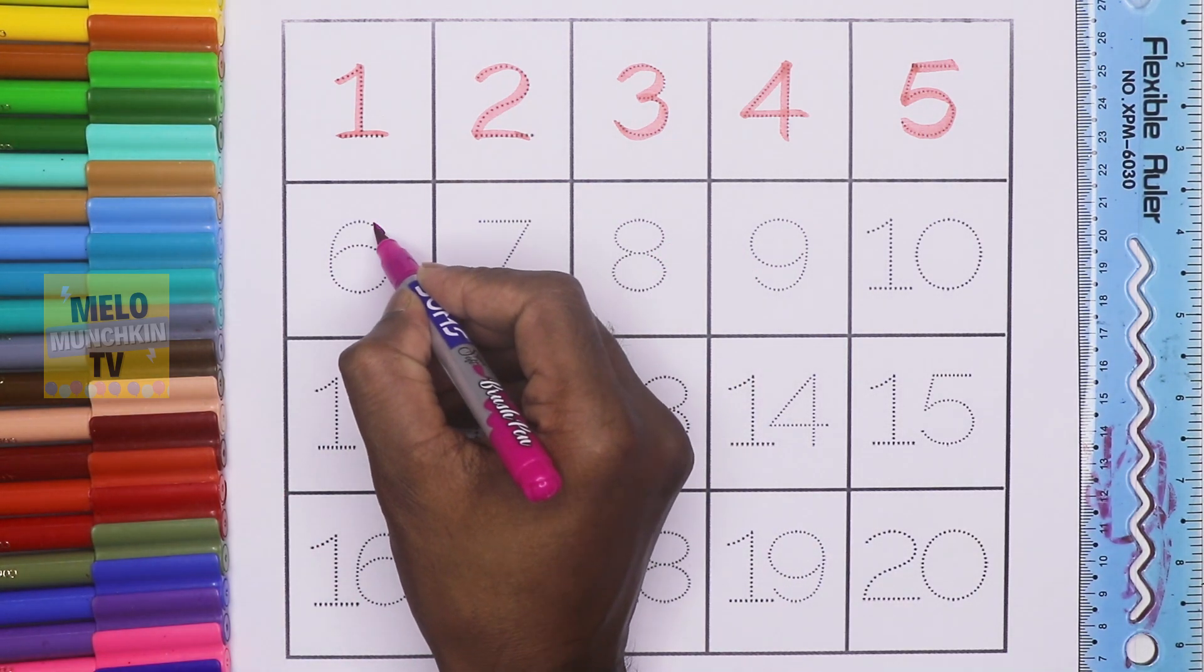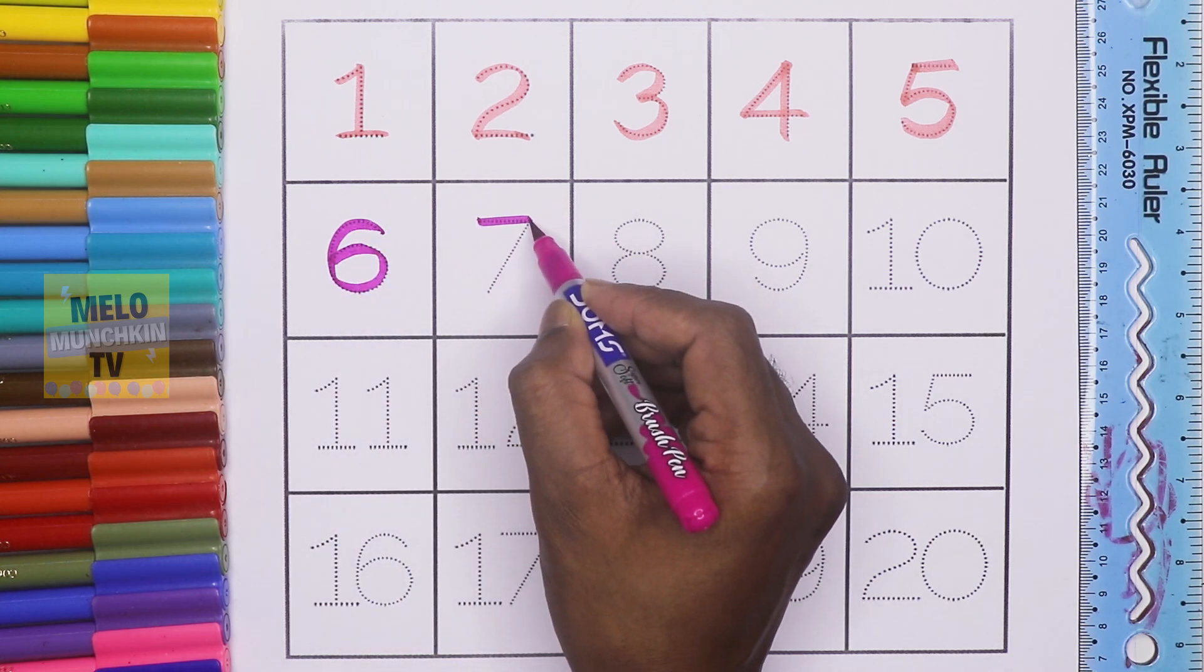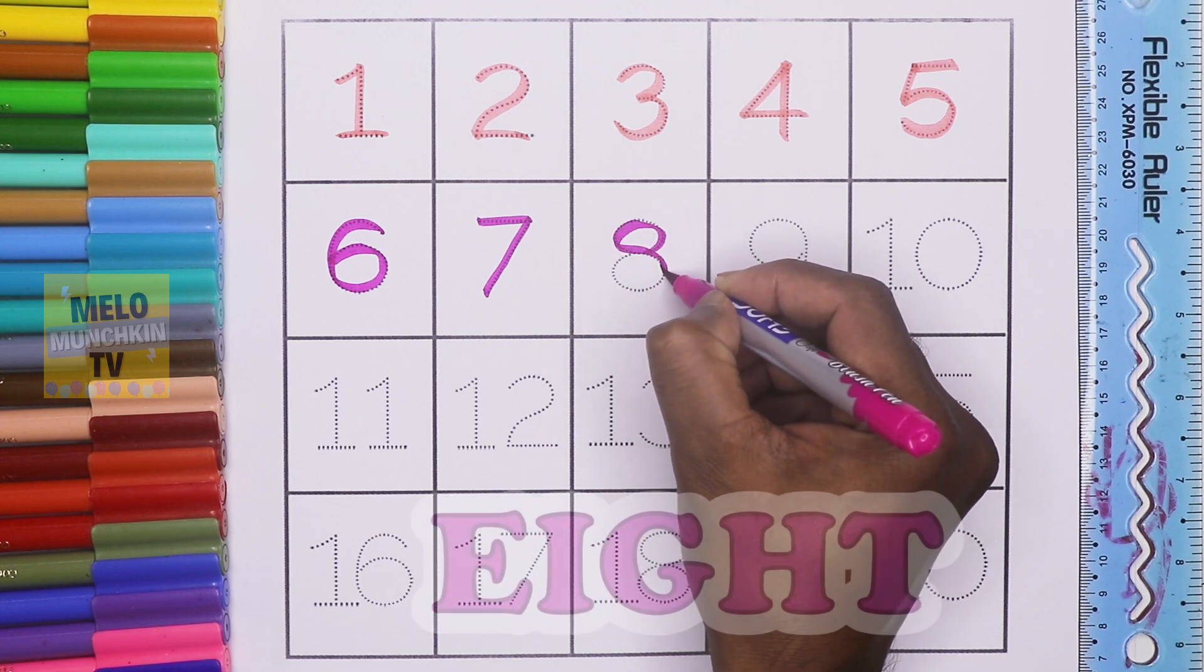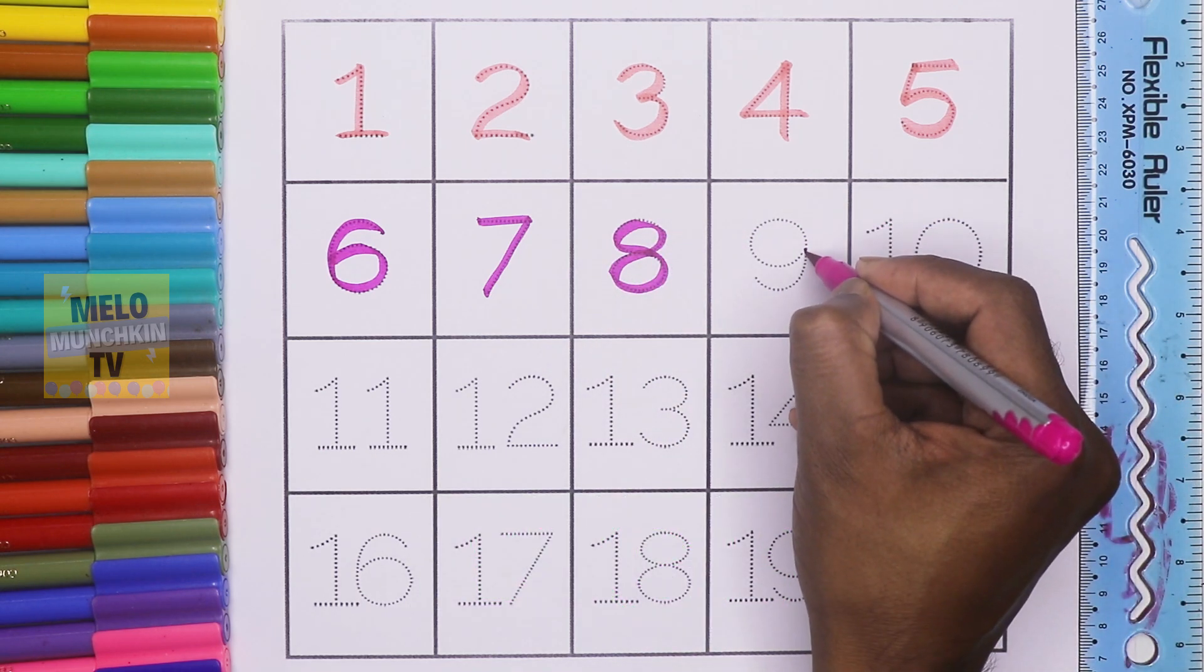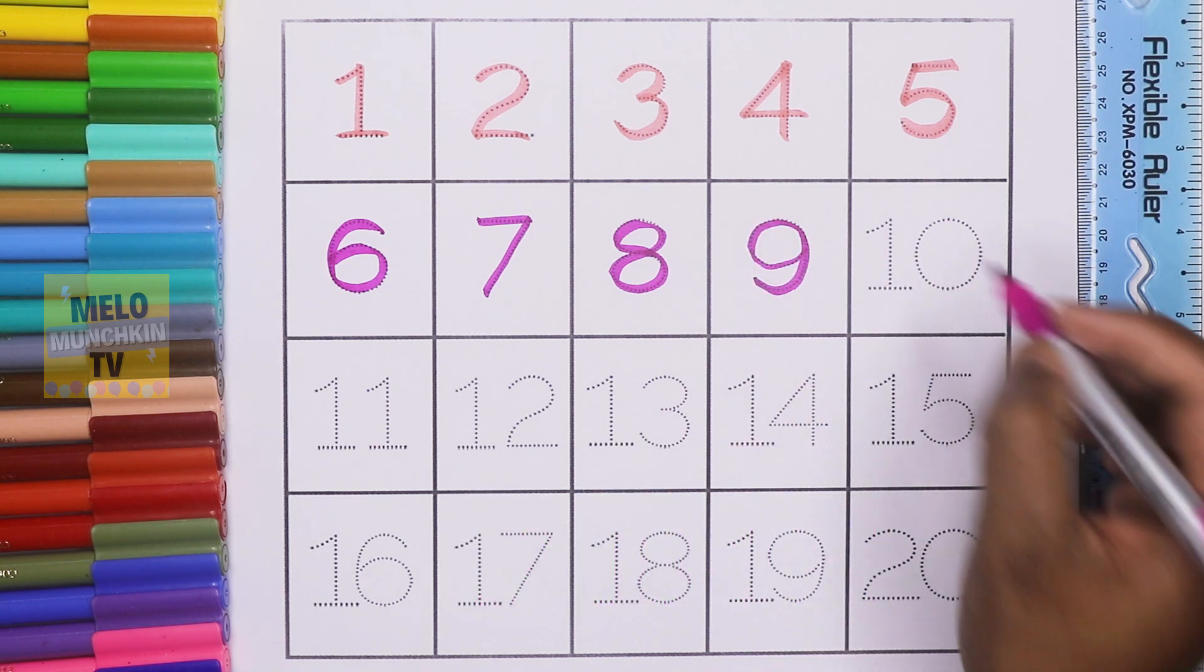Next, I'll take dark pink color. This is number six, S-I-X, 6. This is number seven, S-E-V-E-N, 7. This is number eight, E-I-G-H-T, 8.